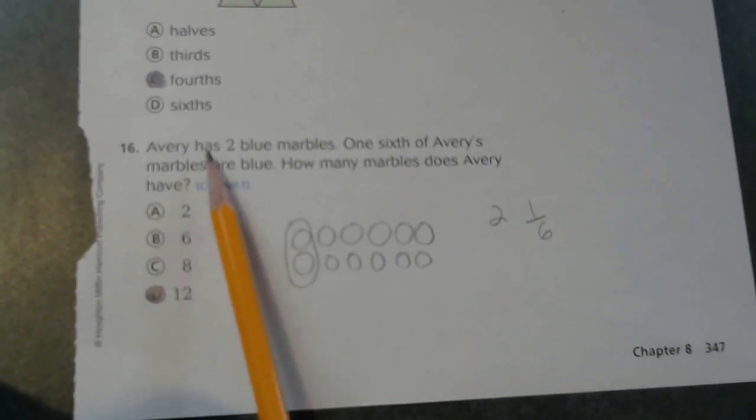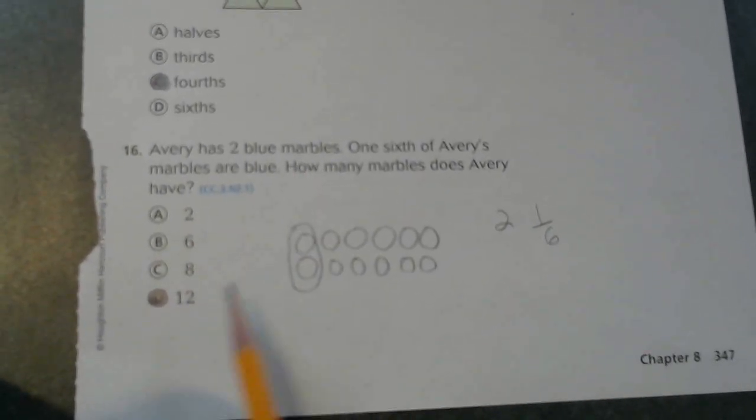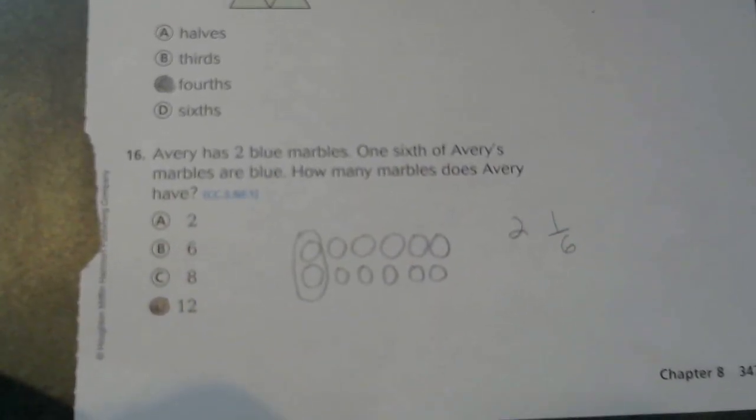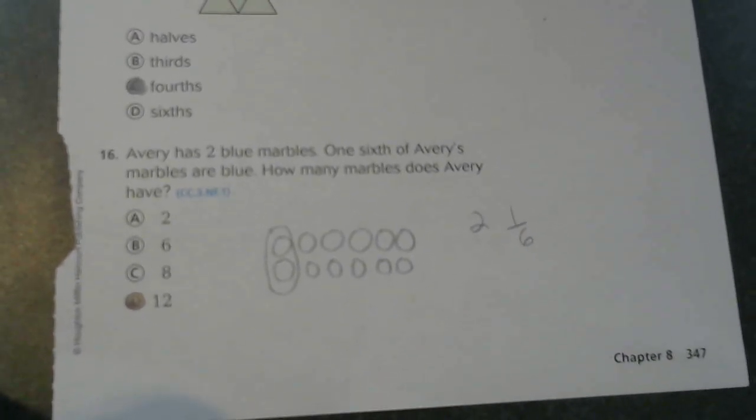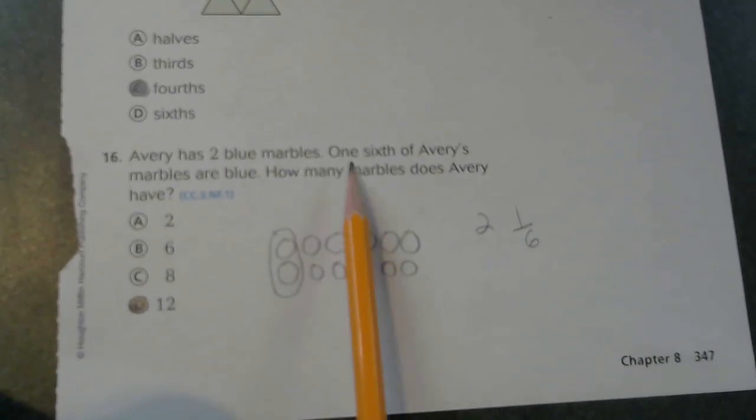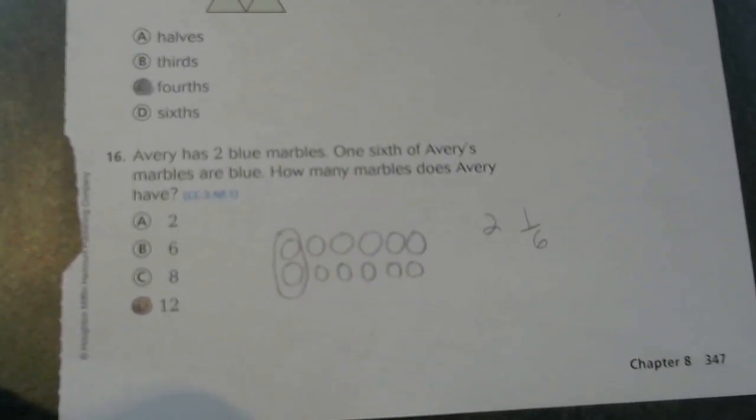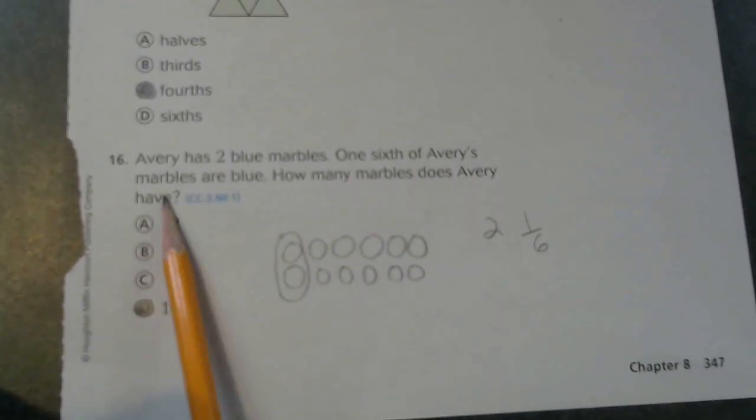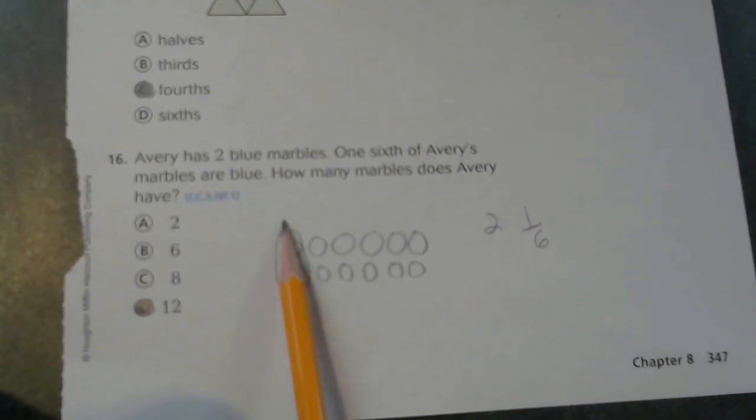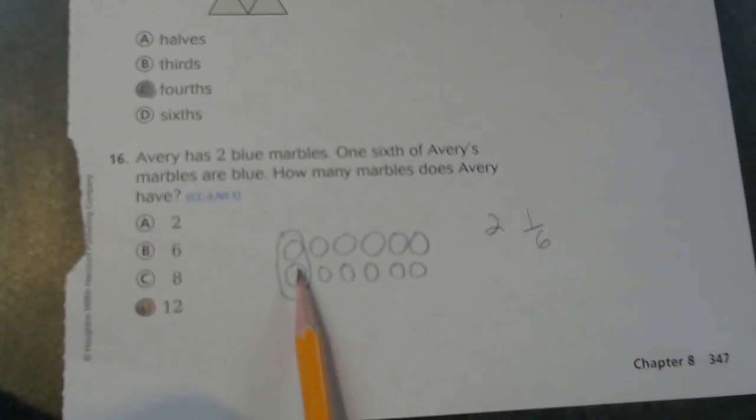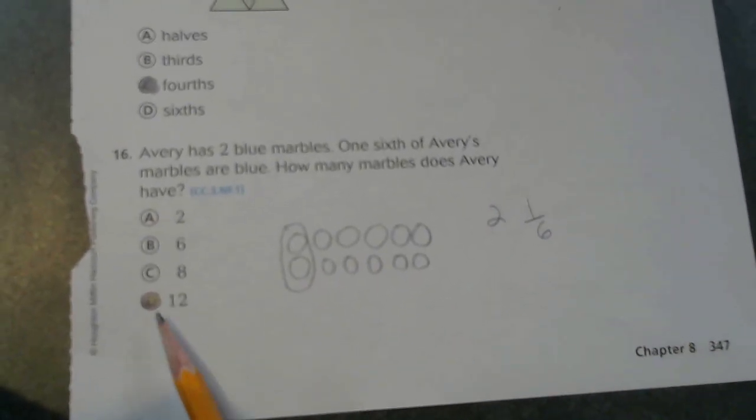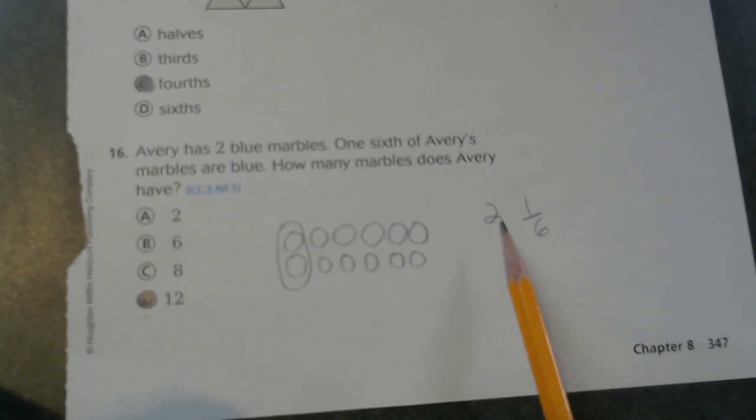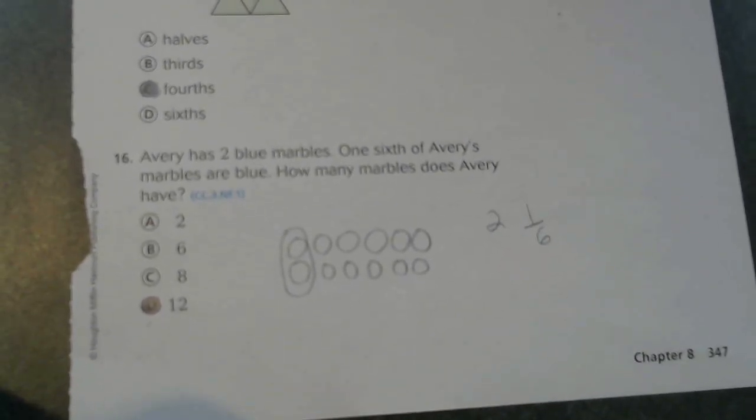Avery has two blue marbles. One-sixth of Avery's marbles are blue. How many marbles does Avery have? Well, if she has two blue marbles and one-sixth of Avery's marbles are blue, we drew two blue marbles and one, two, three, four, five, six of two. So she has 12. Two times six equals 12.